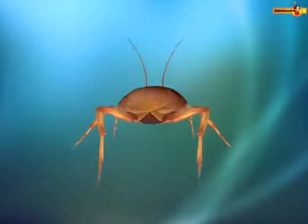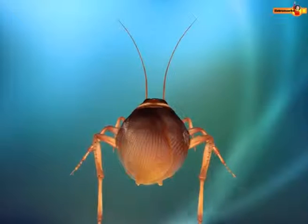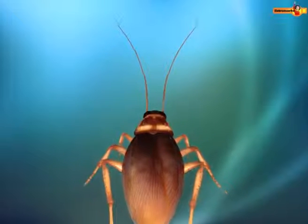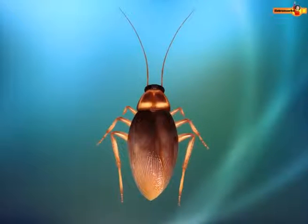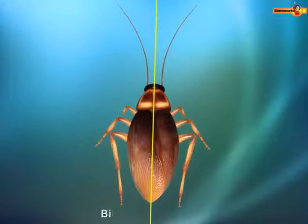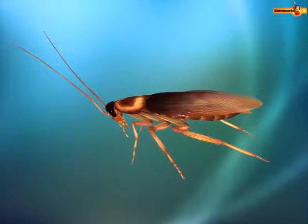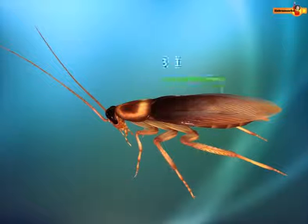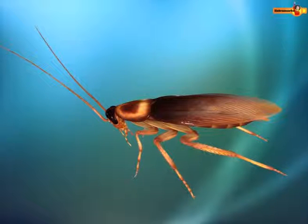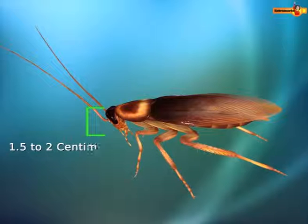Cockroach has a segmented, elongated, cylindrical, and streamlined body that shows bilateral symmetry. A large-sized cockroach measures about 3 inches in length and 1.5 to 2 centimeters in breadth.